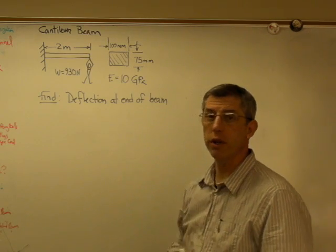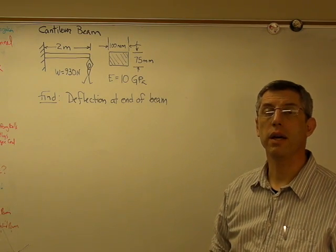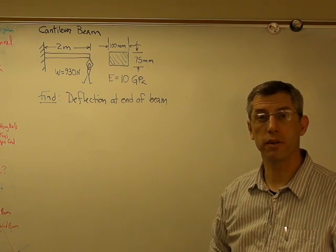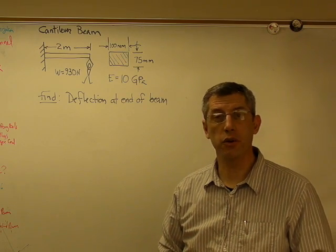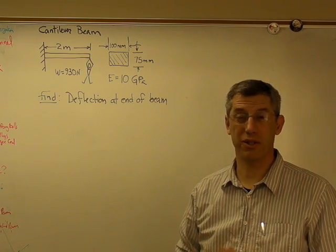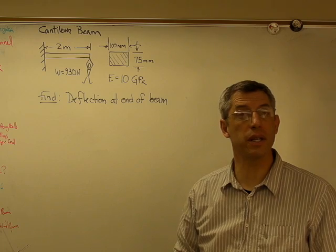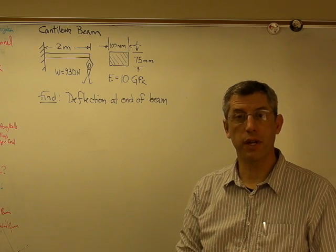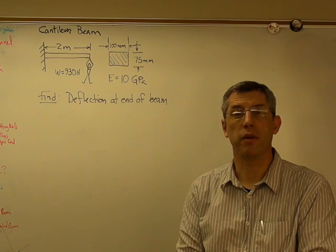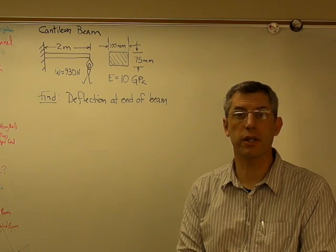The first thing we're going to have to do is find the area moment of inertia of the beam. Now remember, there's two things that tell you how stiff a beam is, how resistant it is to deflection. The first thing is its material, and more specifically, the elastic modulus.